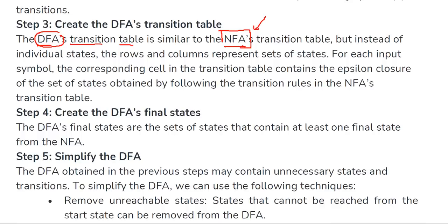First of all, we will take the initial state, and with the help of the initial state we will apply each and every input symbol on the initial state. Then we are creating the new state and observing the states. If any new state comes, again we will apply the same procedure on the new state. Step four is: create the DFA's final state.